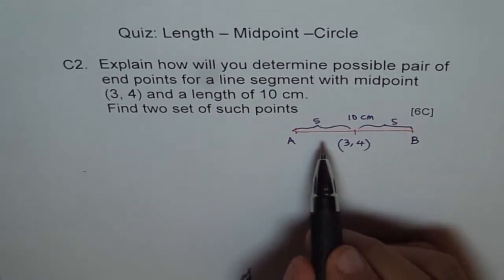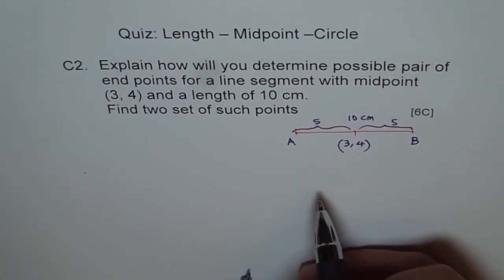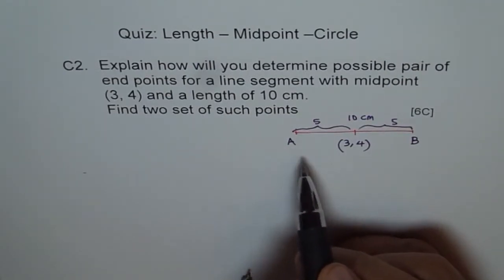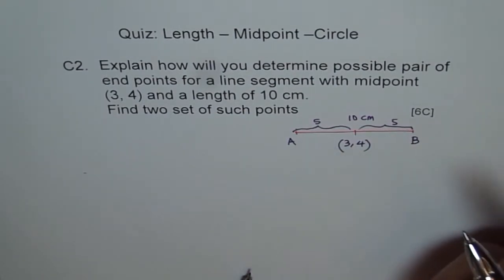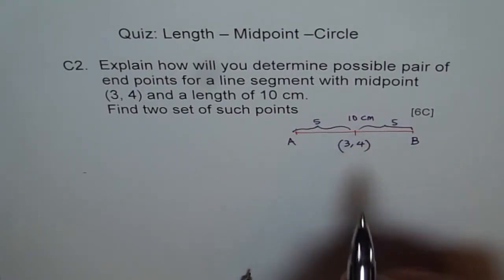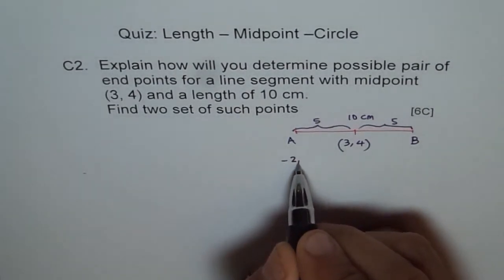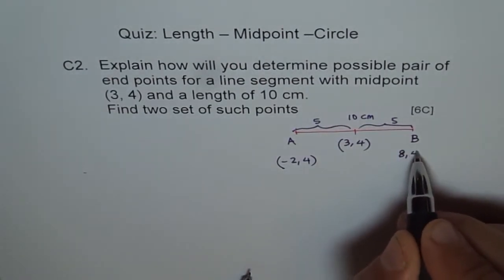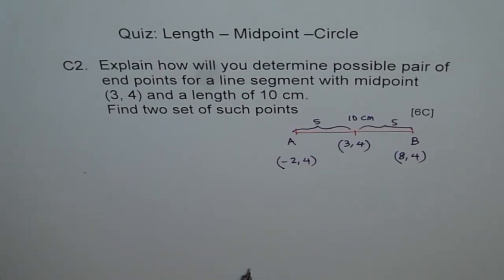Let us assume this is a horizontal line. In that case, the y value will be same. So I can subtract 5 from 3, get this end and add 5 on 3, get that end. So in between the distance will be 10. That is the easiest solution. If I subtract 5, then I get here minus 2,4. If I add 5, I get 8,4. So those are my end points and that is one set.